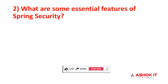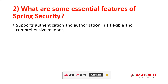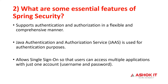Second question: what are some essential features of Spring Security? The main feature is to handle authentication and authorization in a flexible manner. JAAS (Java Authentication and Authorization Service) is a module provided by Sun Microsystems, now part of Oracle, and Spring Security is implemented using it. It allows Single Sign-On (SSO) — for example, Google Suite lets you access Gmail, Google Drive, Google Docs, and YouTube all with one-time authentication.